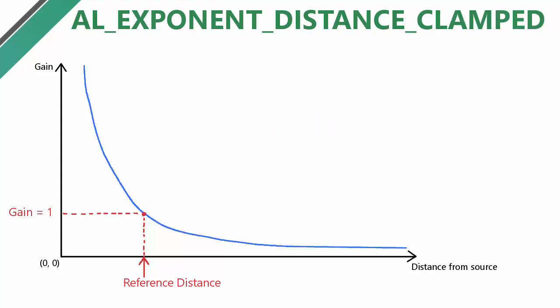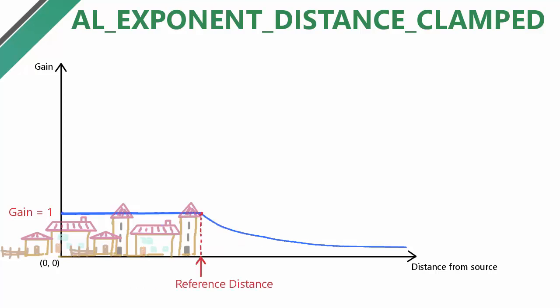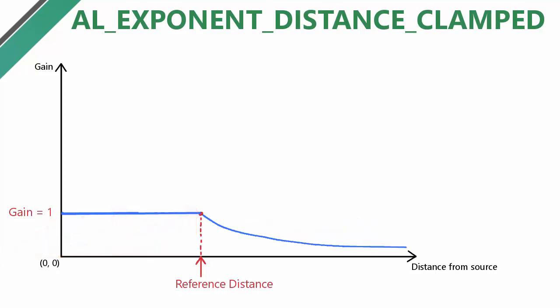The clamped version of this distance model simply clamps everything below the reference distance to a gain of 1. This can be useful for when you want a sound effect to be played over an area rather than being emitted from a single point. For example, imagine that the source was placed in the middle of a town in your game and plays some general town background noise. By setting the reference distance to the radius of the town, you would hear the town sound effect at full volume anywhere inside the town, but when you leave the town the sound would get quieter and quieter. If you wanted the sound to be played from a single 3D point, you could set the reference distance to 0.